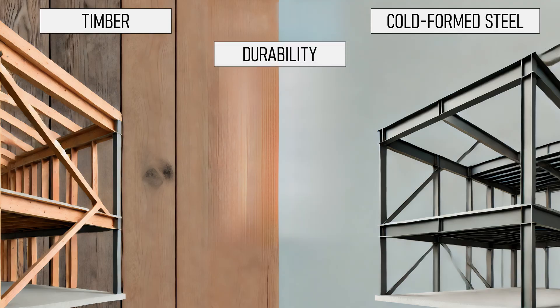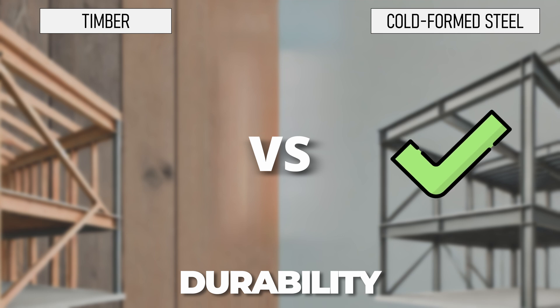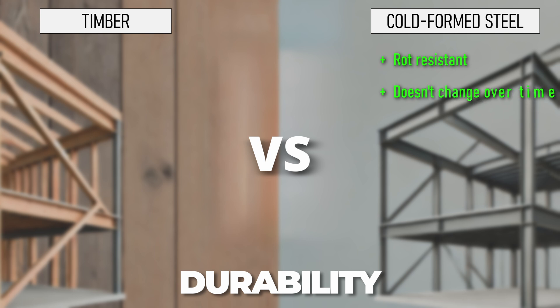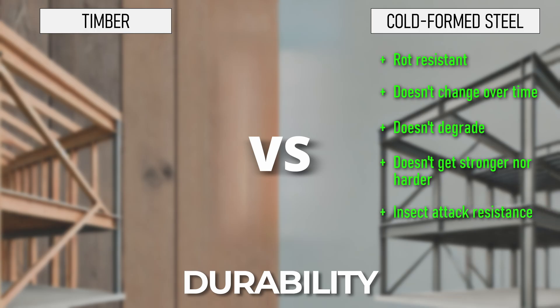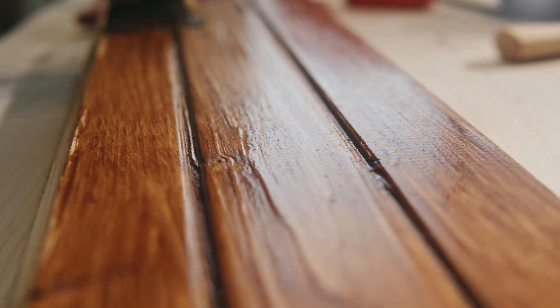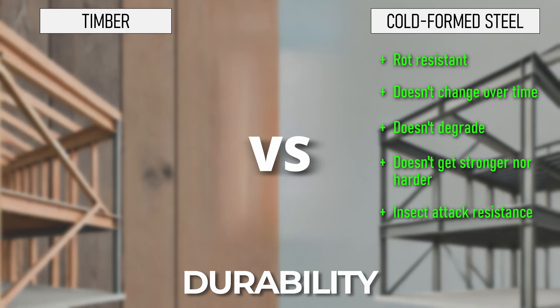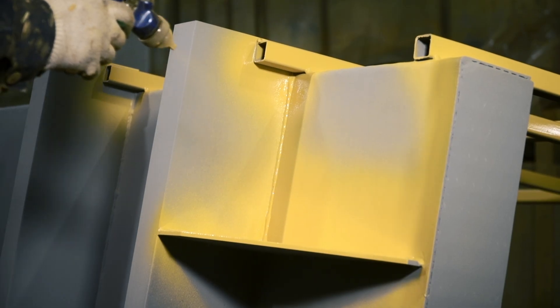So what are the differences? Starting with durability — most of the time cold-formed steel will win out. It's not susceptible to rot, it doesn't really change or degrade over time. Timber, when exposed to moisture changes, can shrink or warp as it ages. Cold-formed steel is also not susceptible to insect attacks — in certain locations it's almost recommended, as it can't be attacked by termites, whereas timber is very susceptible unless regularly treated. It's also not susceptible to swelling or warping when in contact with water. Cold-formed steel can potentially rust, but most of the time it's treated, making it better in the long term.